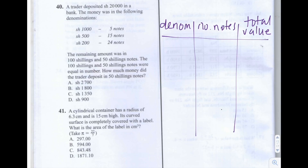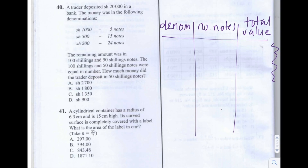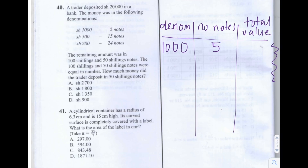To work out the value of the third column, we multiply the values in the previous two columns. For the first row, we have 1,000 shillings. We have five 1,000 shilling notes, and the total value is 5 times 1,000, which is 5,000. So we simply multiply the two columns to the left.